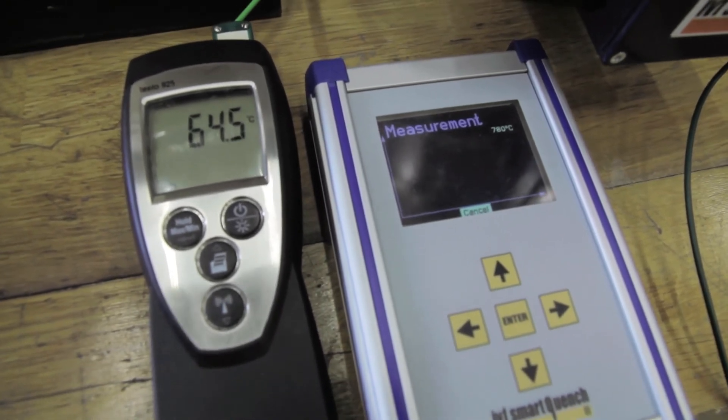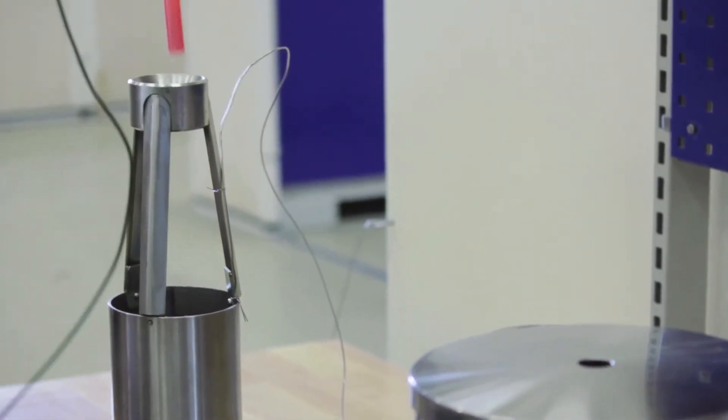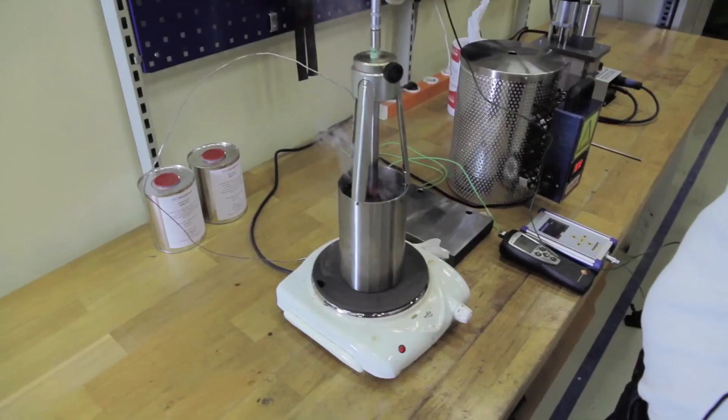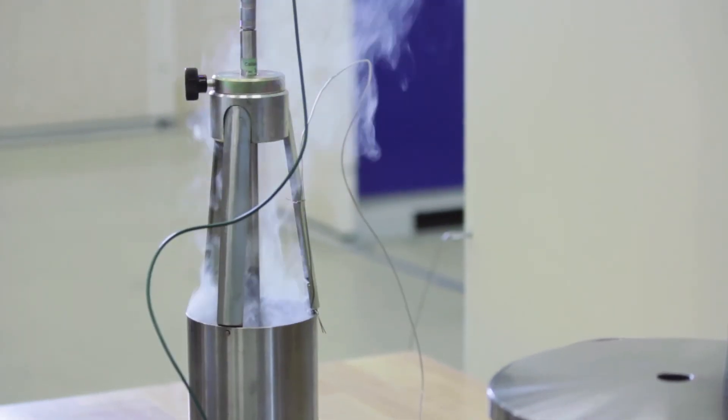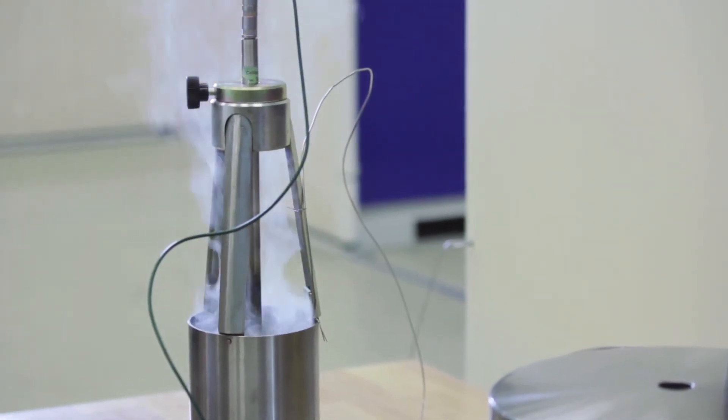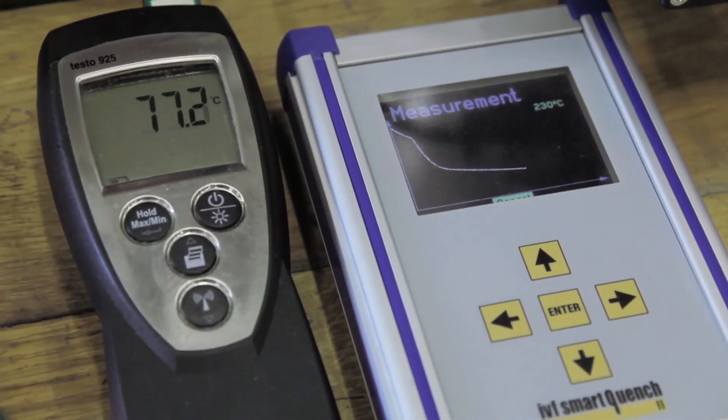As soon as the probe has reached the correct start temperature, rapidly lift the probe straight up, move it to above the quenchant, immerse it and let the cone find its place in the tripod. After the probe is positioned in the tripod, take a step back and watch the curve that slowly appears on the display.